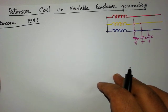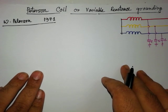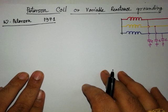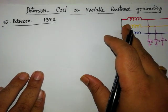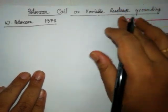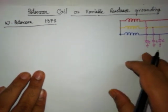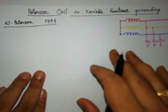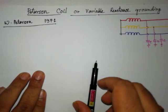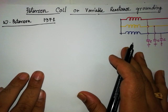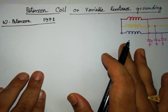The main concept behind the Peterson coil is that the capacitive component of the fault current is high in the ungrounded system. As I have already discussed, when the system is not grounded, the phase voltage will become root three times, equal to the line voltage. So the charging current will increase to three times its normal value — that is a huge problem. That can be controlled by using the Peterson coil. When an LG fault occurs, the magnitude of the capacitive current becomes three times, and that can be controlled by using the Peterson coil.